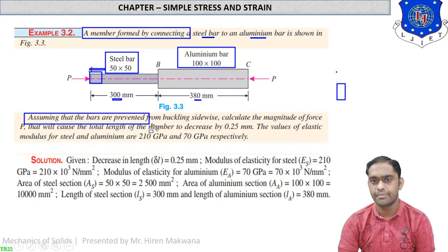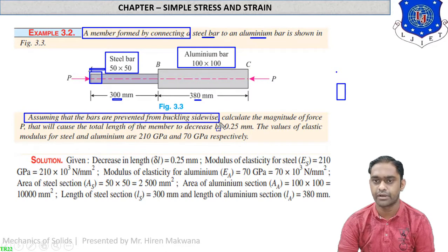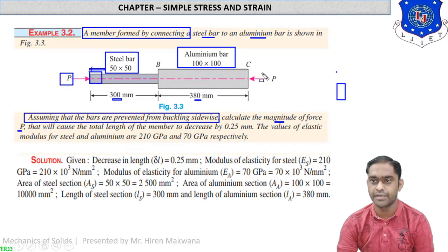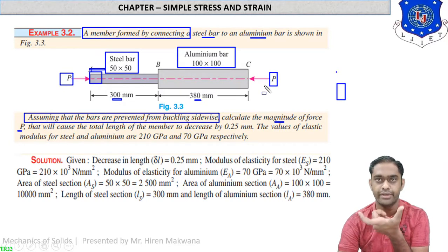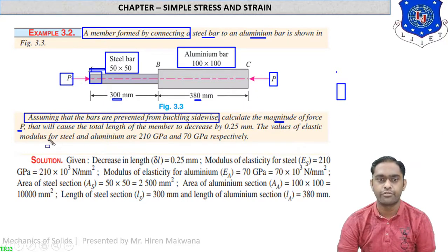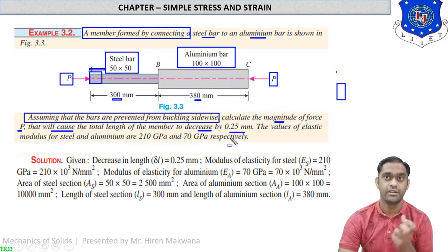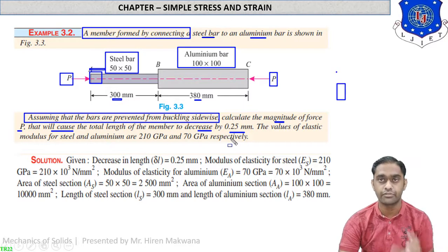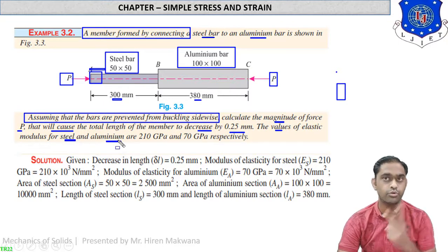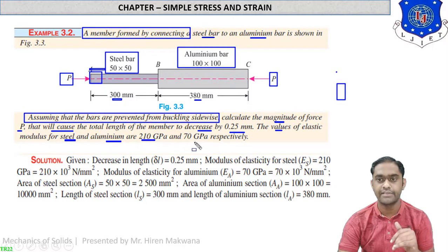Assuming the bars are prevented from buckling sideways, calculate the magnitude of compressive force P that will cause the total length of the member to decrease by 0.25 mm. So δL is given and we have to find P — this is the reverse problem. The modulus of elasticity for steel is 210 GPa (210 × 10³ MPa) and for aluminium is 70 GPa (70 × 10³ MPa), since both are different materials.